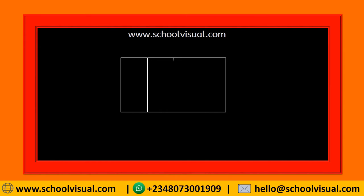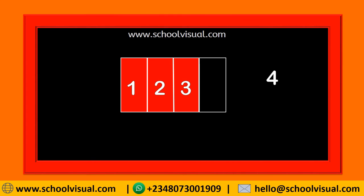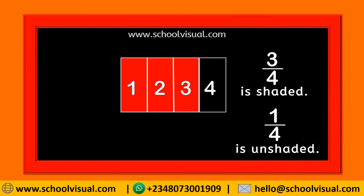Let's try another one. How many parts do we have here? One, two, three, four. I write down four. How many parts are shaded? One, two, three — so this is three over four. Of this shape, three out of four parts are shaded. Now tell me how many parts are unshaded? Just one — so one out of four is unshaded. Three out of four are shaded. Do you understand? This is how to find fractions of shapes.